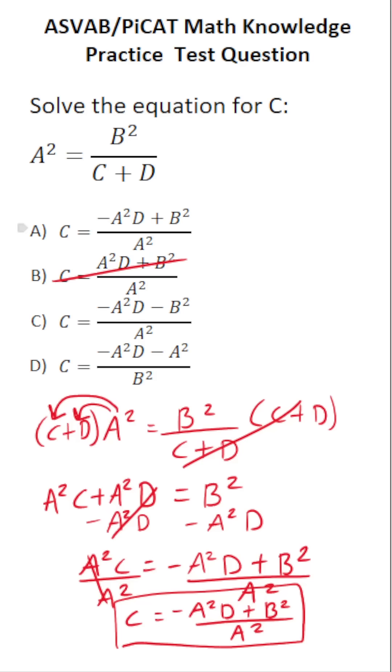Negative A squared times D plus B squared. This is minus A squared. This is minus B squared. This one is plus B squared. So the correct answer to this one is solving this literal equation for C gives you C equals negative A squared times D plus B squared all over A squared.